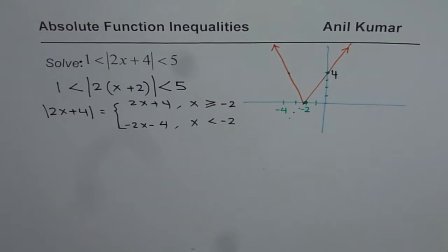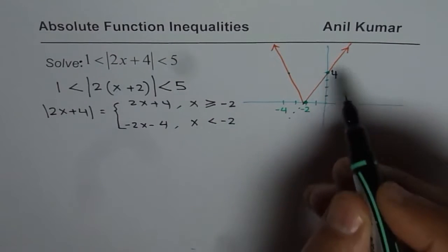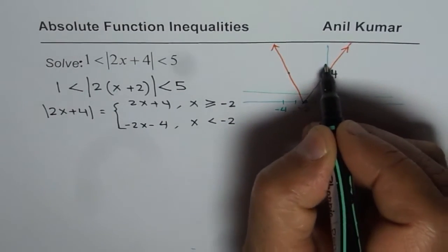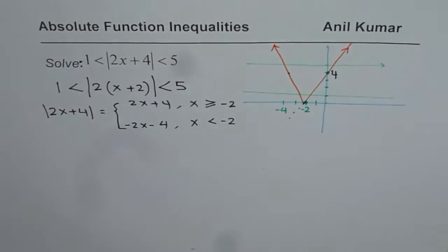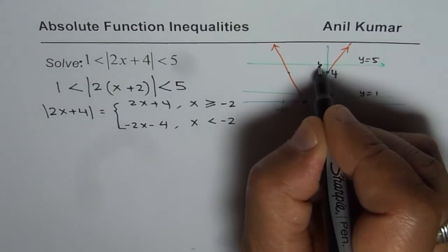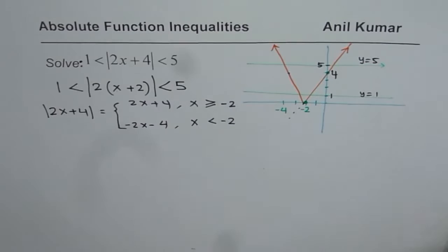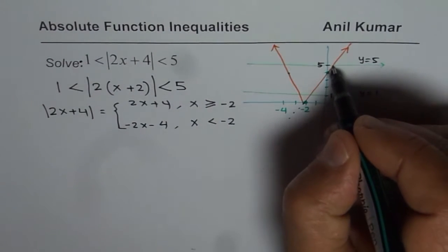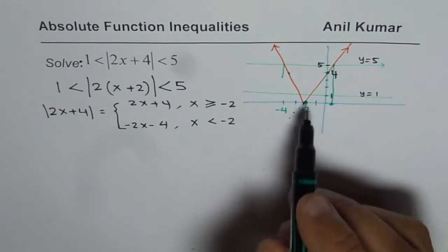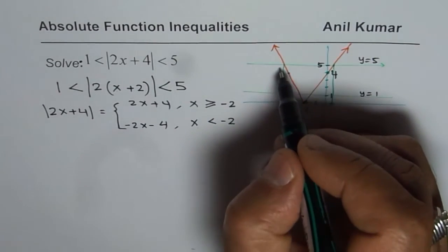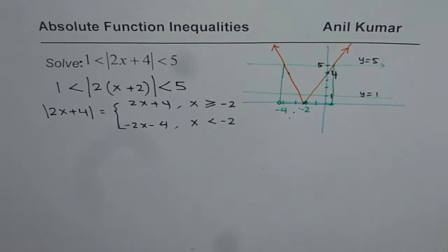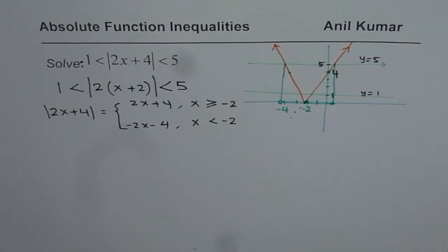Now, graphically, I can show you the solution. We are saying that this function should be between 1 and 5. So let me draw the line y equals 1 and y equals 5. The solution is the region where the absolute function lies between these two horizontal lines — you can clearly see the solution between those intersection points. Graphically, it is fairly simple to identify the solution.